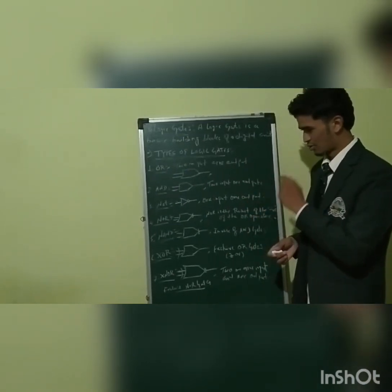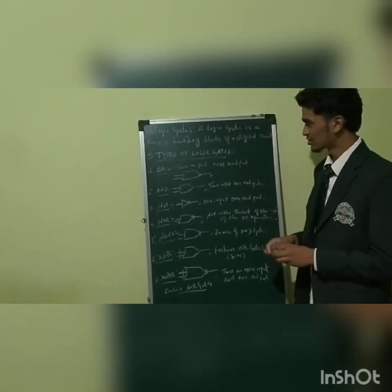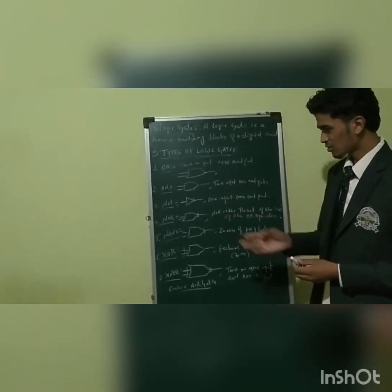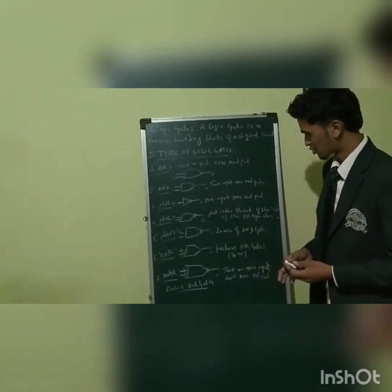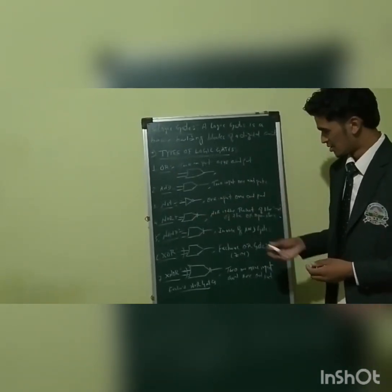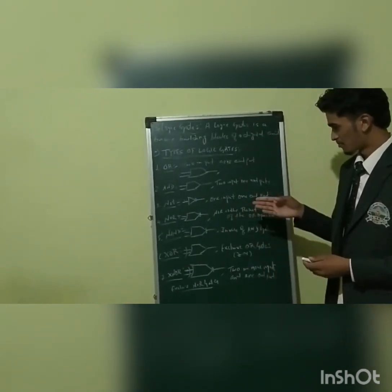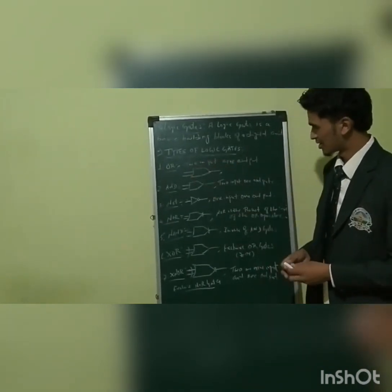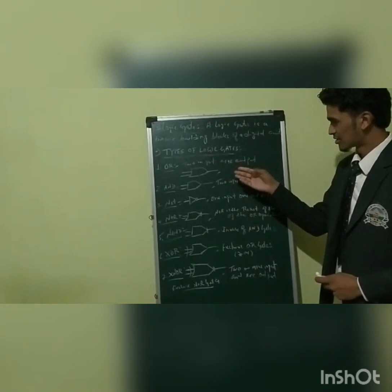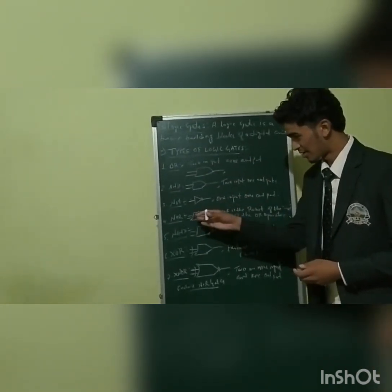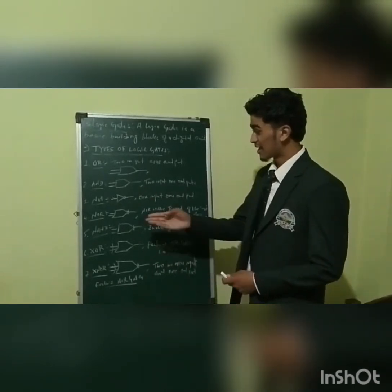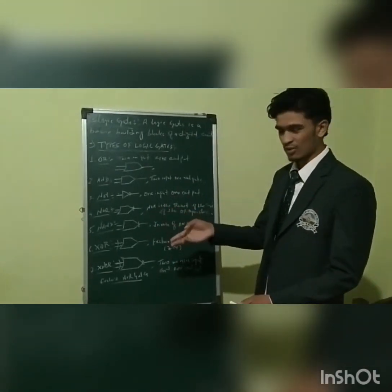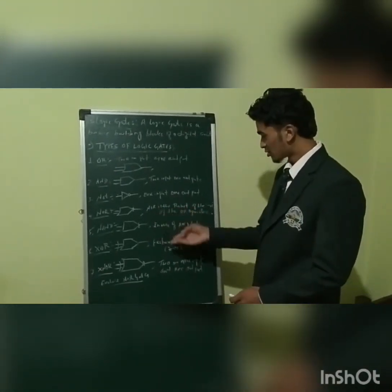Number four is the NOR gate. The NOR gate gives the result as the negative of the OR gate. It has two inputs and one output. Number five is the NAND gate, which is the inverse of the AND gate.